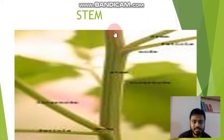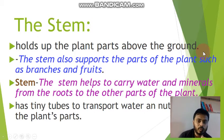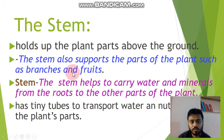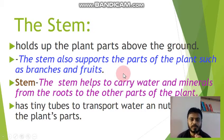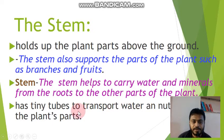Second part, that is stem. What is the function of the stem? They hold up the plant's parts above the ground — roots hold the plant in the ground and the stem holds the plant's parts above the ground. The stem also supports parts of the plants, such as branches and fruits. The stem helps to carry water and minerals from the roots to the other parts of the plants.